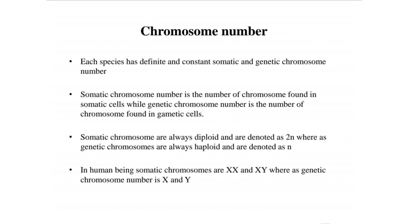Chromosome number: each species has a definite and constant somatic and gametic chromosome number. Every species has a fixed number of chromosomes, with constant somatic and gametic chromosome counts.